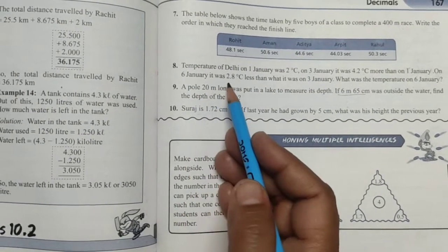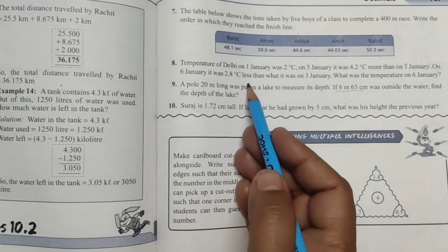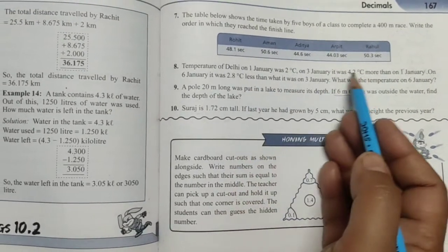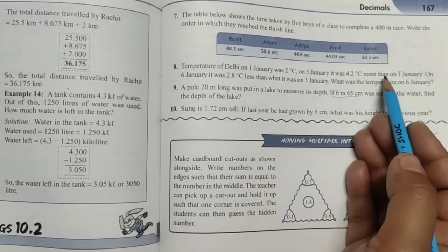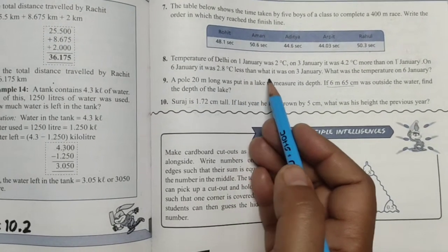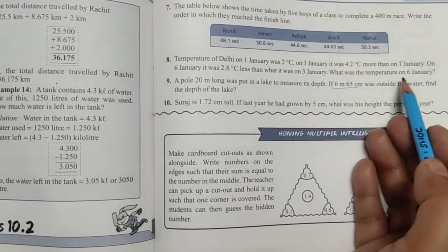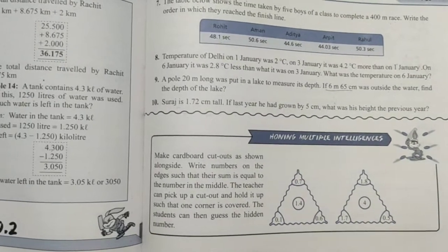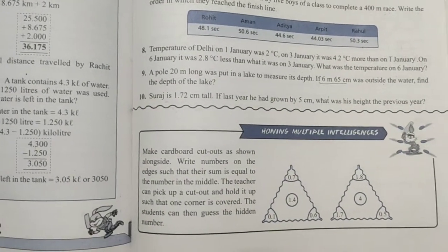And on 6th January, it was 2.8 degrees Celsius less than what it was on 3rd January. Okay? So what was the temperature on 6th January?